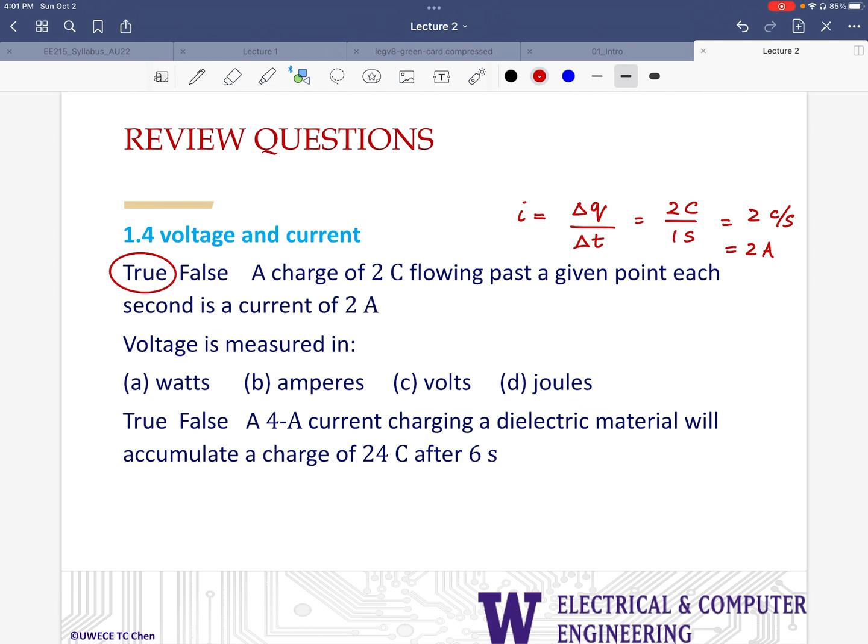Next, voltage is measured in volts. Pretty straightforward there. Next, a true or false question. Again, we are trying to have a relationship between current, charge, and time. Current is rate of change of charge, so I equals delta Q delta T. We are given both the charge and over how much time it is changing. So that's 24 coulombs divided by 6 seconds gives us 4 amps or 4 coulombs per second, which is what we are given over here, which means this is also true.